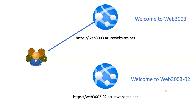In this case, we have not cloned the existing web app and we've deployed the new application on the new deployment slot. A new URL gets created: web3003-02.azurewebsites.net. For testing purposes, if we access this URL we can see the new content. However, all users in our environment are still accessing the old URL and seeing the old content.